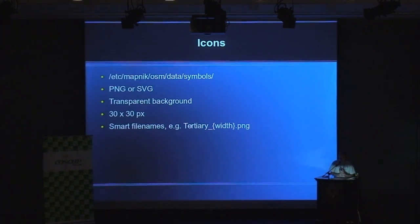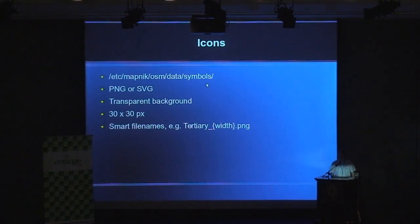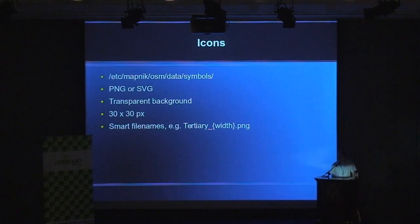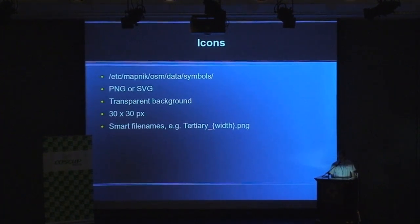For the icons, we put them into the /etc/mapnik-osm-data/symbols directory. They can be in PNG or SVG format, must have transparent backgrounds, and should be 30 by 30 pixels. We can use smart file names for these images and then reference them in the OSM style sheet — meaning we can reference them with placeholders in the style sheet.